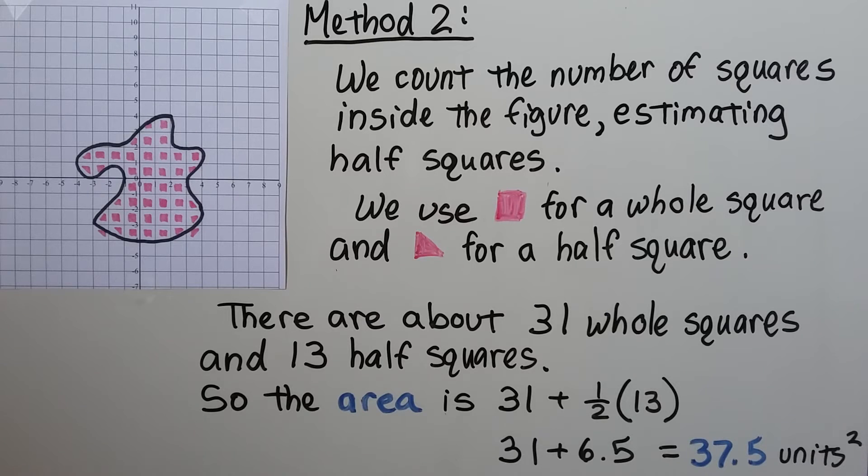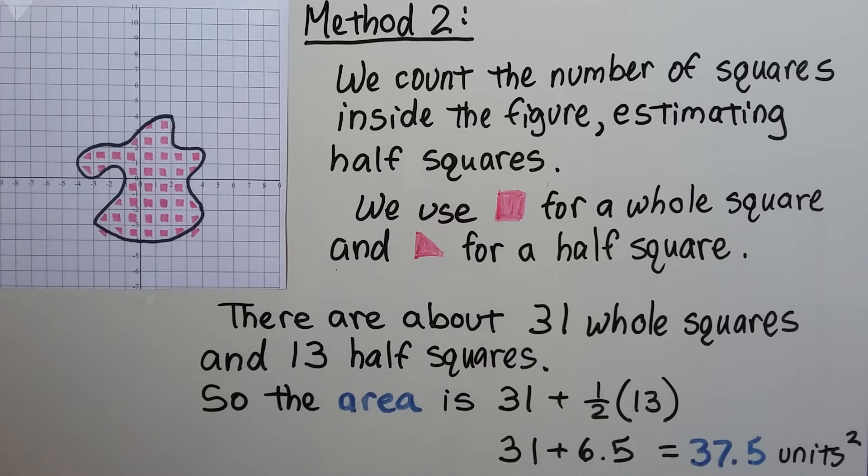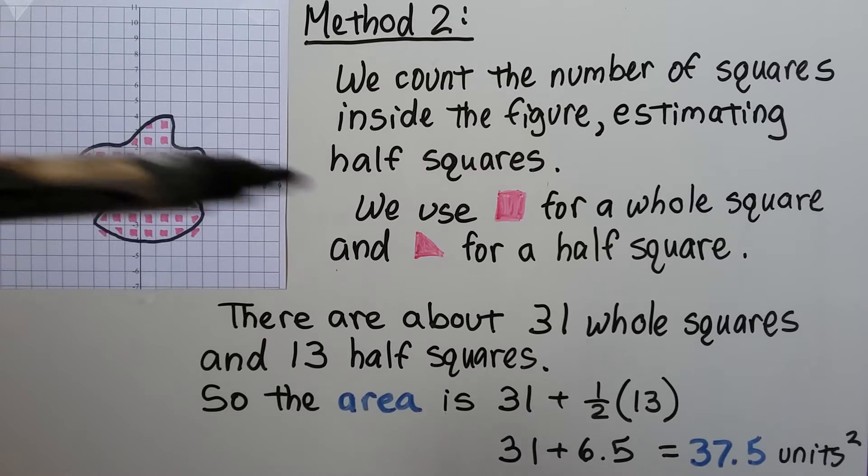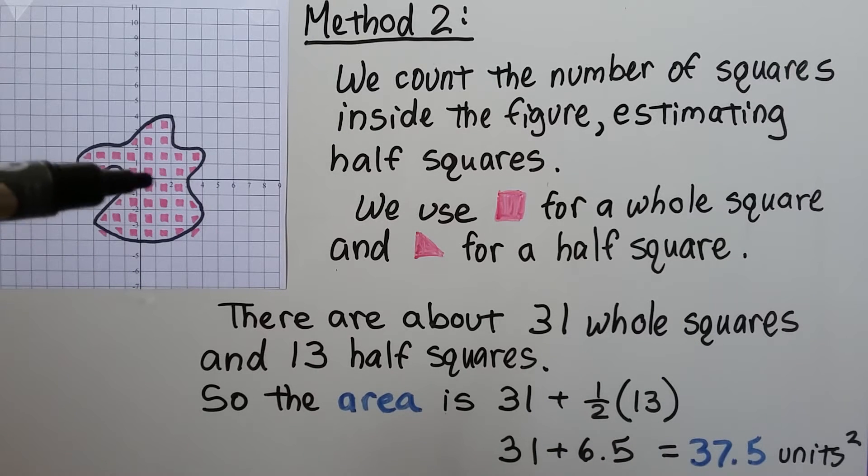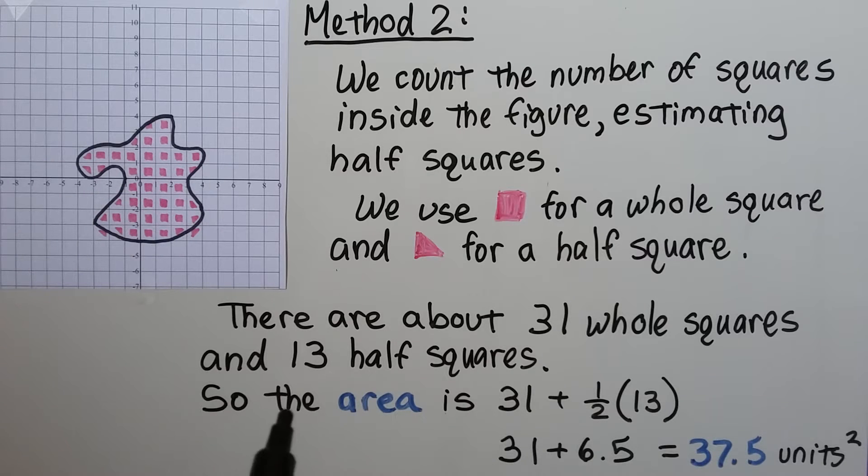The second method of doing it is we count the numbers of squares that are actually inside the figure, estimating half squares. We can use a little square for the whole square and a triangle for a half square. There's about 31 of these full squares inside, and there's about 13 little triangles. So the area is 31 full squares plus 13 half triangles. So we're going to do half times 13, which is 6.5. We add this together and get 37.5 units squared. The other way we did it, we got 36 units squared. So maybe this one's a little more accurate.